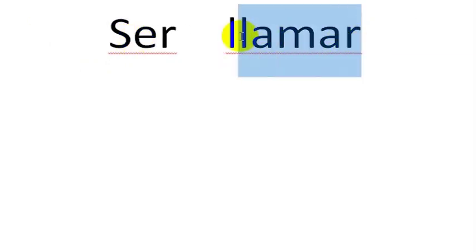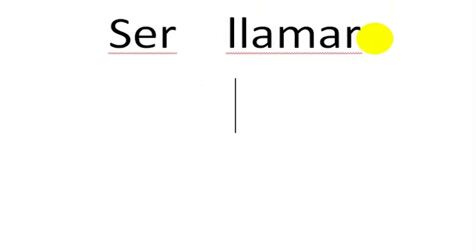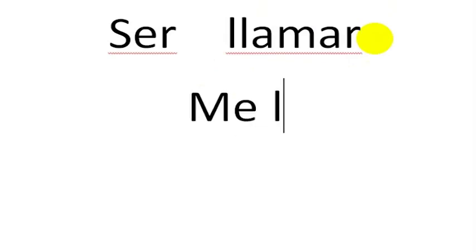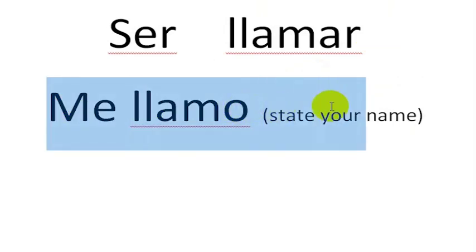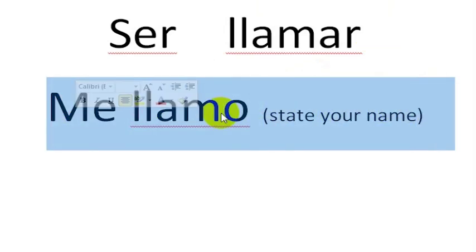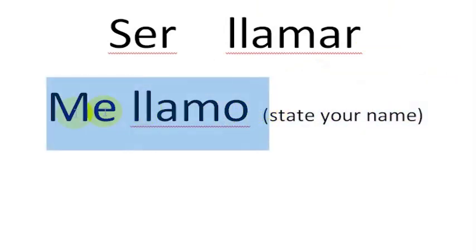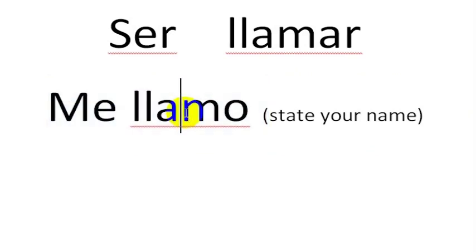Llamar is the verb for something 'to be called.' So if you wanted to say 'I am called Jonathan,' you would say me llamo Jonathan. So that would mean 'I am called,' or 'my name is Jonathan.'